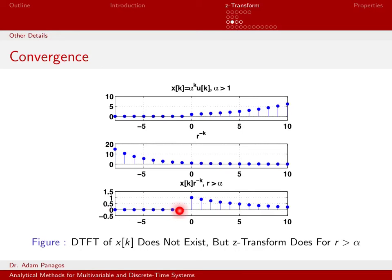For positive time, I have this signal that was blowing up, this signal that was decaying. The r to the minus k is actually decaying faster than alpha to the k is blowing up. So the net product is still something that is decaying. And the reason that's happening is because I chose an r that was larger than alpha. I actually made that choice very explicit when I chose the r for this plot.